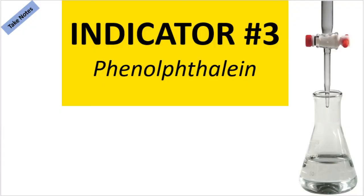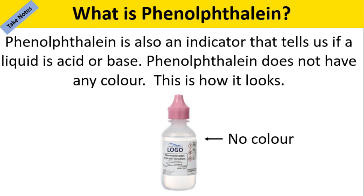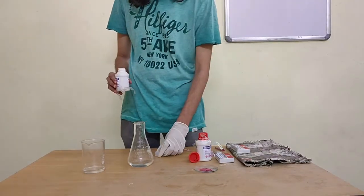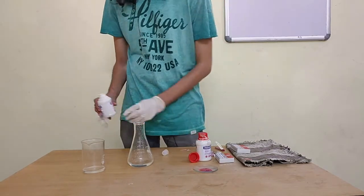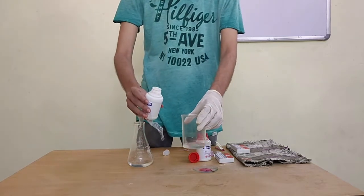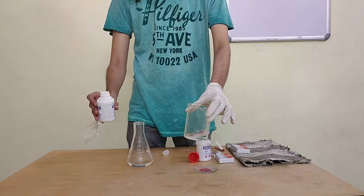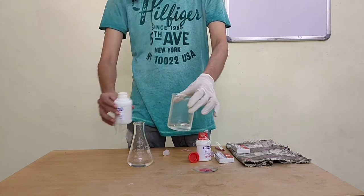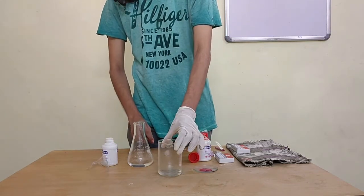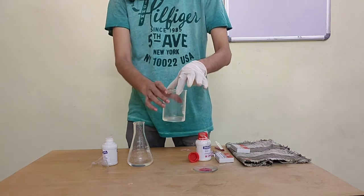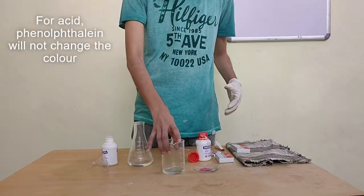Finally, let's test phenolphthalein. It's a colorless, pale liquid. I'll pour it into the acid — do you notice any color change? No. I'll pour some more just to be sure. Phenolphthalein is colorless normally, and if added to an acid it remains colorless. So if phenolphthalein stays colorless, it means the solution is an acid.